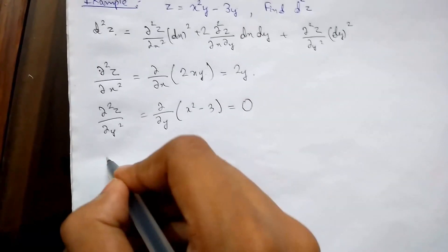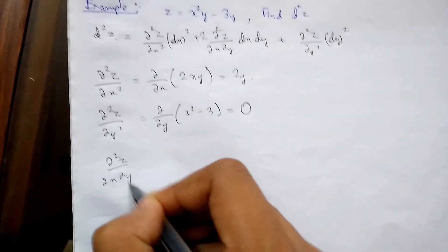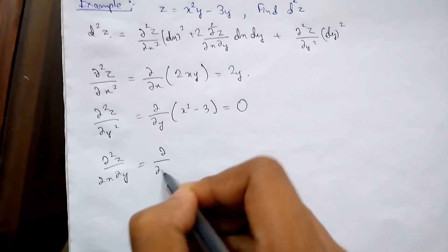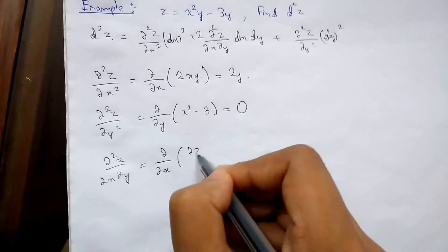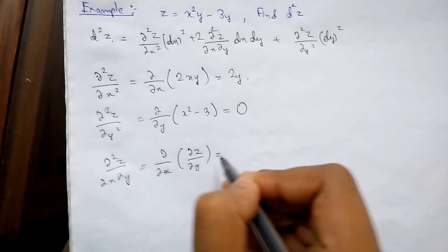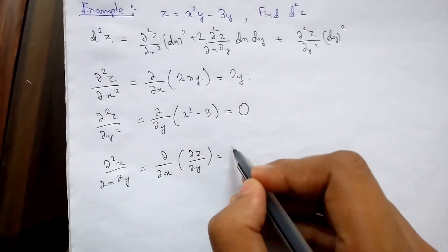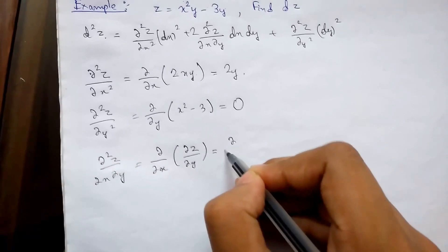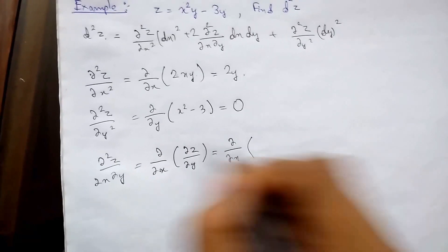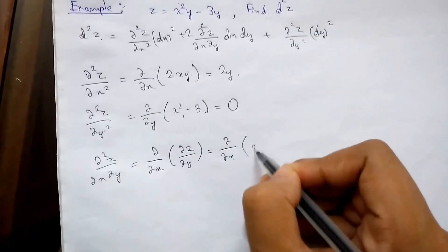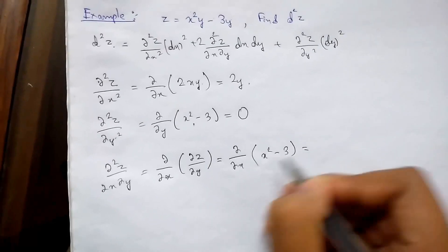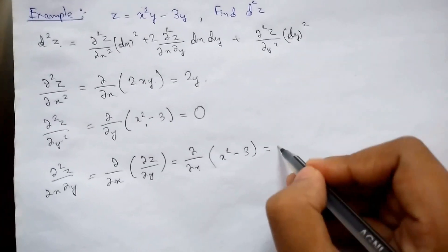Now we will find del 2z upon del x del y. So now we will differentiate first with respect to y. So this will be x square minus 3. Now differentiating with respect to x we get 2x.